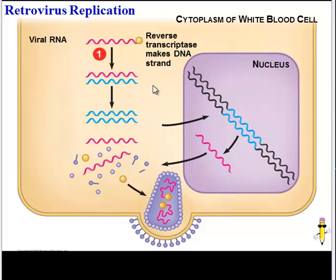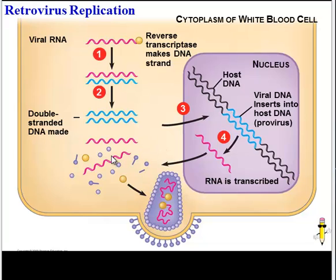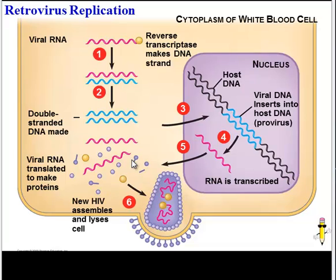Once there is this strand of DNA, a second strand of DNA is made, usually using the host cell's DNA polymerase. At this point, the viral DNA inserts itself into the host's DNA and becomes a provirus. It may stay here for a few hours, a few days, even a few years. At some point it will become activated, and the viral DNA will transcribe some viral RNA. That viral RNA will leave the nucleus, find a ribosome, and be translated to make viral proteins. At which point, the newly assembled HIV virus will lyse or burst out of the cell.